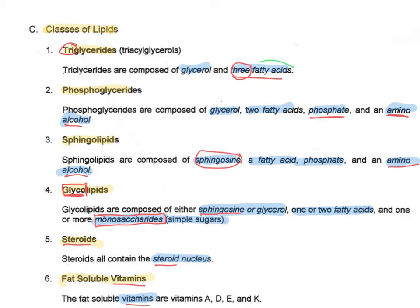Notice that the first four classes all have something called a fatty acid in them, so we're going to talk about fatty acids next. It's important to note that fatty acids are not lipids — they are part of these types of lipids, but by themselves are not considered lipids. In the next few videos, we're going to talk about each of these classes individually, and at the end of each section, I'd like you to take notes and summarize them onto a summary page to help with exam preparation.